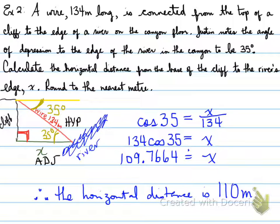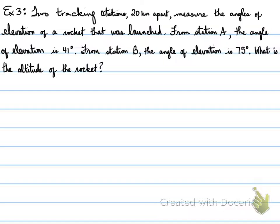Therefore, the horizontal distance of the canyon floor is 110 meters because we rounded to the nearest meter. All right, folks. Hopefully that makes sense to you. Got one more to look at.